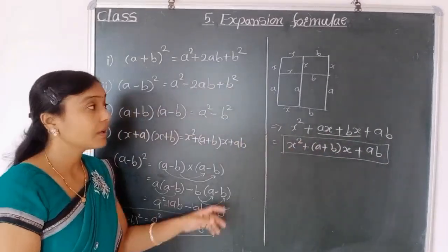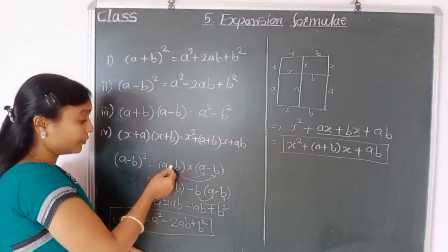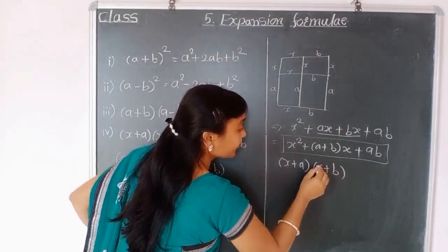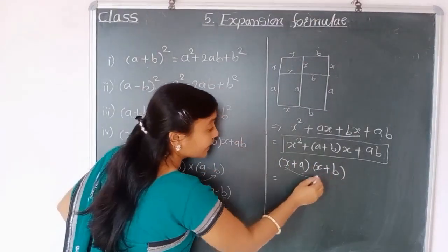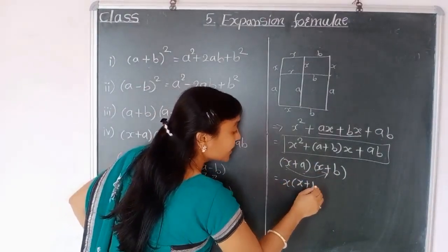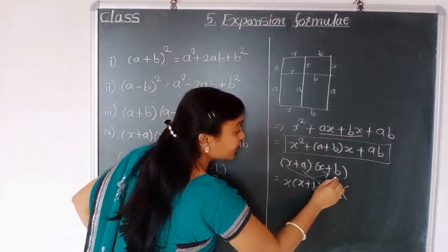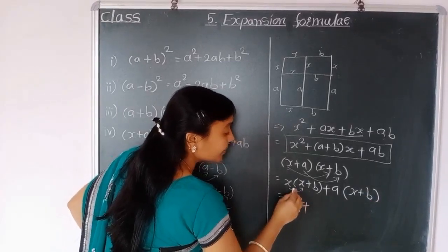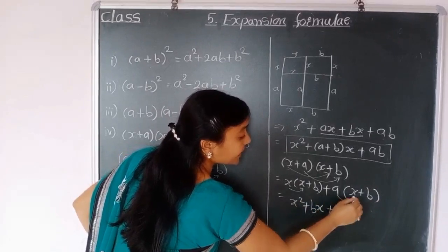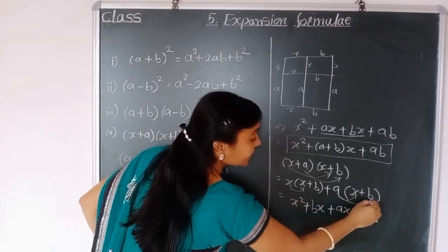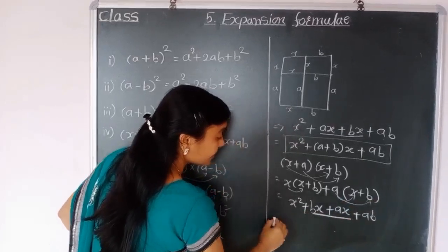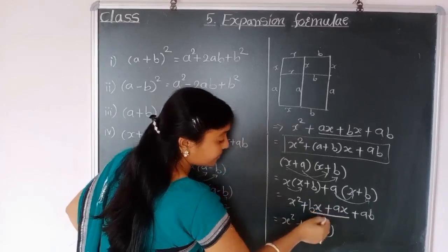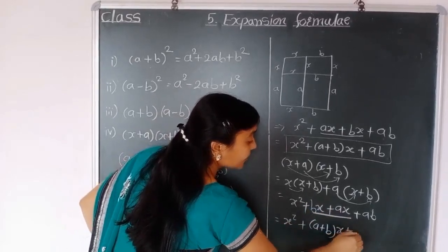From this formula we can also solve this expansion using the direct algebraic method. Multiplying x plus a into x plus b: x into x gives x squared, plus x into b gives bx, plus a into x gives ax, plus a into b gives ab. Taking x as common from the middle terms, we write x squared plus a plus b times x plus ab. We again get the same expansion.